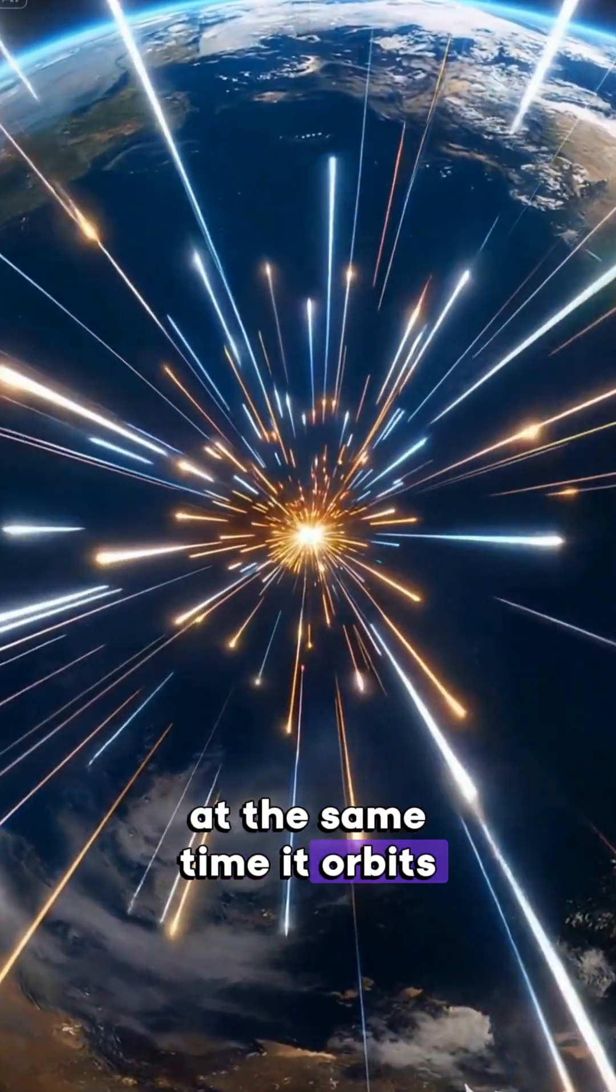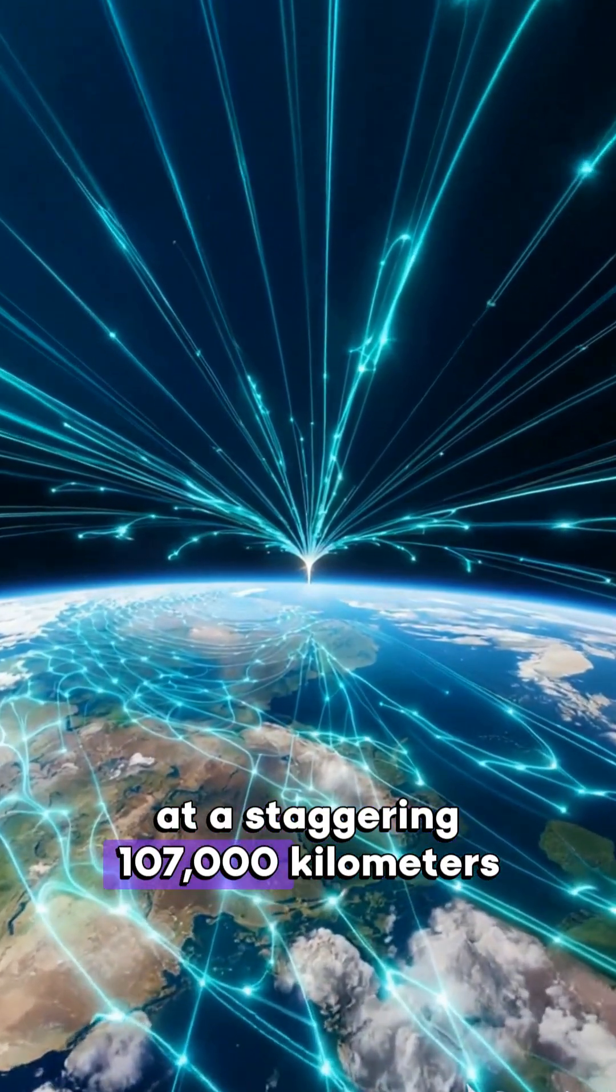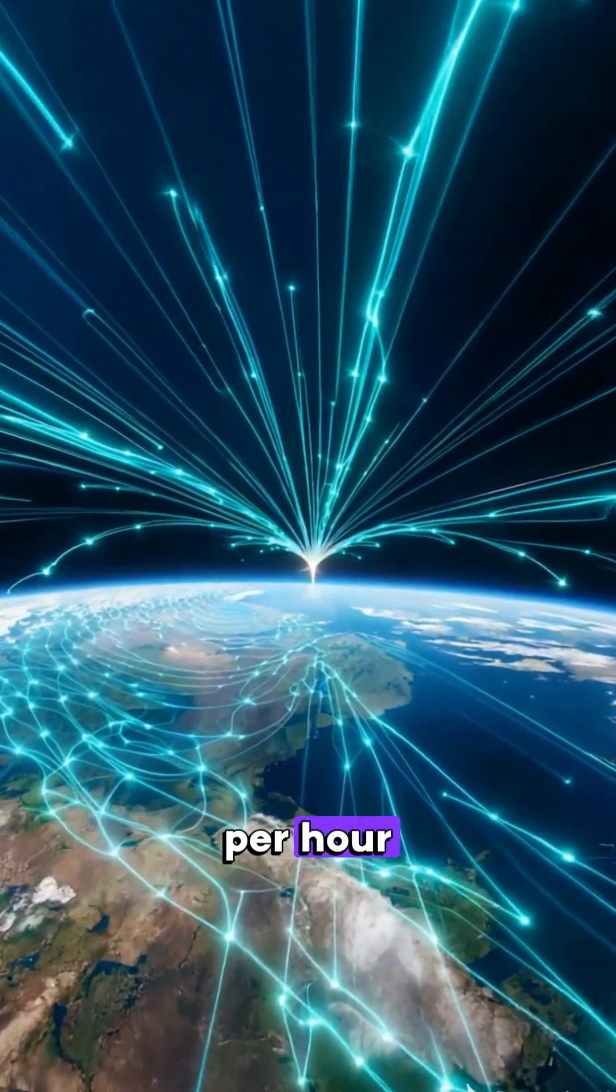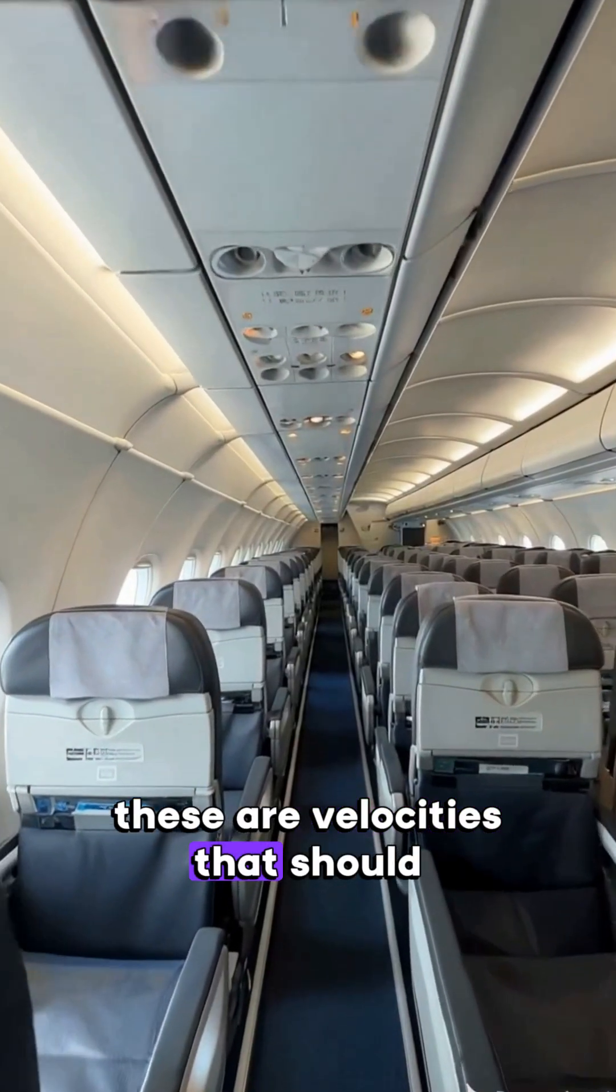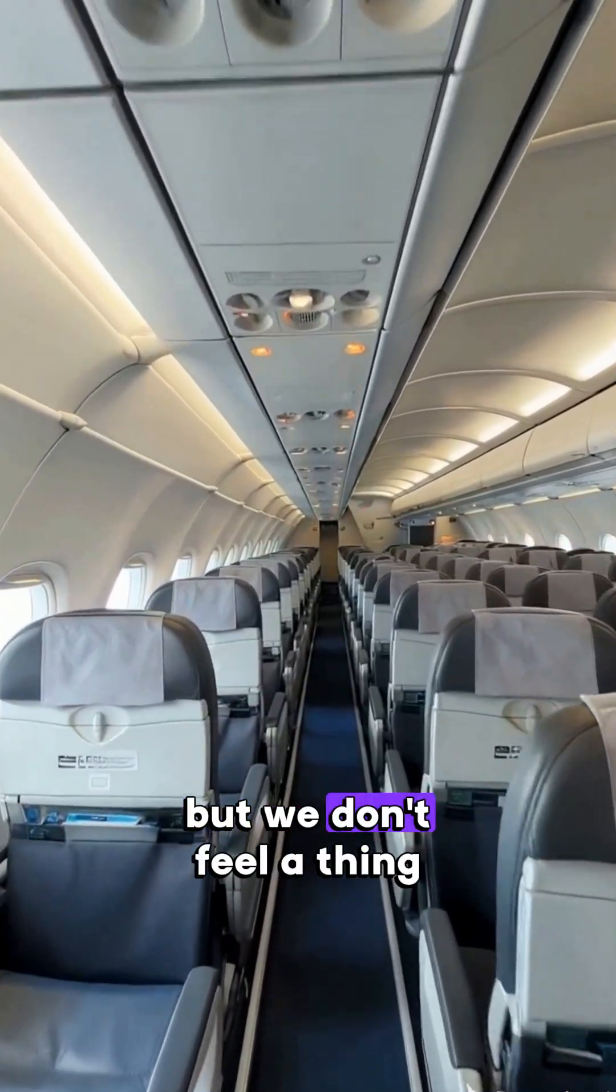At the same time, it orbits the sun at a staggering 107,000 kilometers per hour. These are velocities that should feel extreme, but we don't feel a thing.